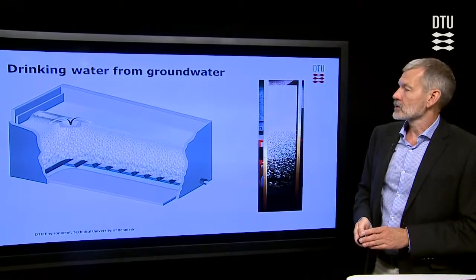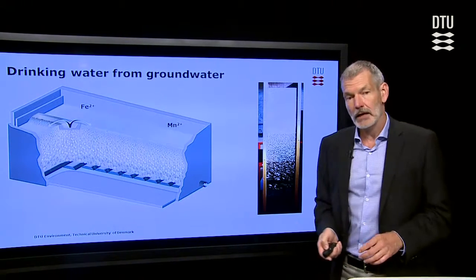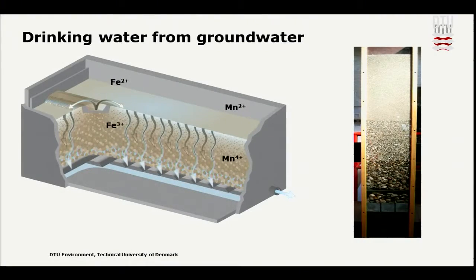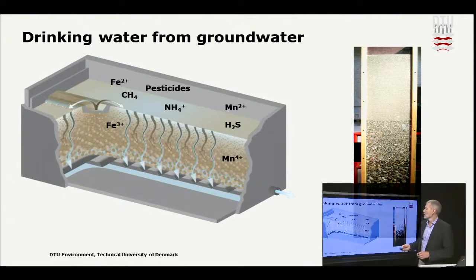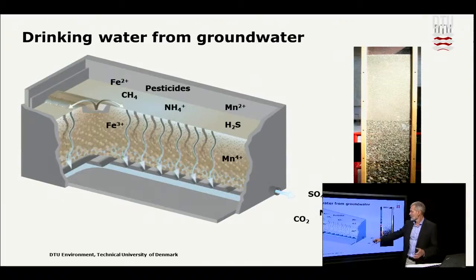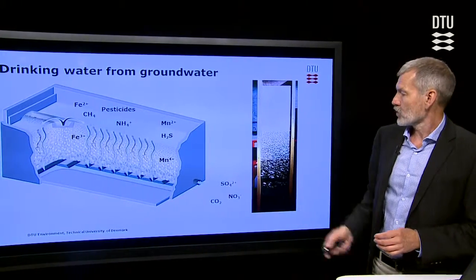If we look at some of the compounds that are removed here, there could be iron and manganese, which are being oxidized, and the oxidized form then stays in the filter. It could also be compounds like methane, ammonium, sulfides, or pesticides, and they are all oxidized completely and then leave the filter with the water.